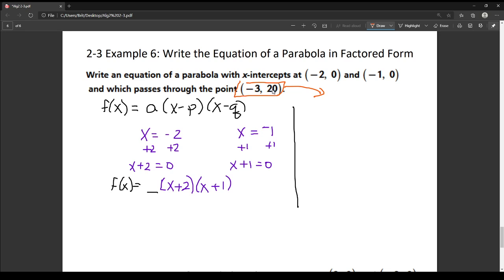So f of x is the same thing as y. So I'm going to put 20 equals a, because I don't know it yet, and then I have x plus 2, so I have negative 3 plus 2, and then negative 3 plus 1.